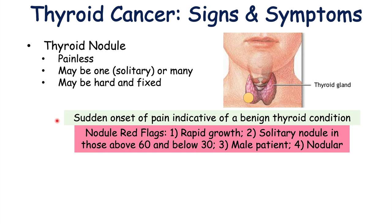There are particular red flags regarding thyroid nodules. First, rapid growth of the thyroid nodule is an ominous sign of a likely cancerous growth. Second, a solitary nodule in those above 60 and below 30 is another red flag. Third, if the patient is male. Fourth, if the nodule itself is nodular — meaning the lump is lumpy and bumpy rather than smooth.